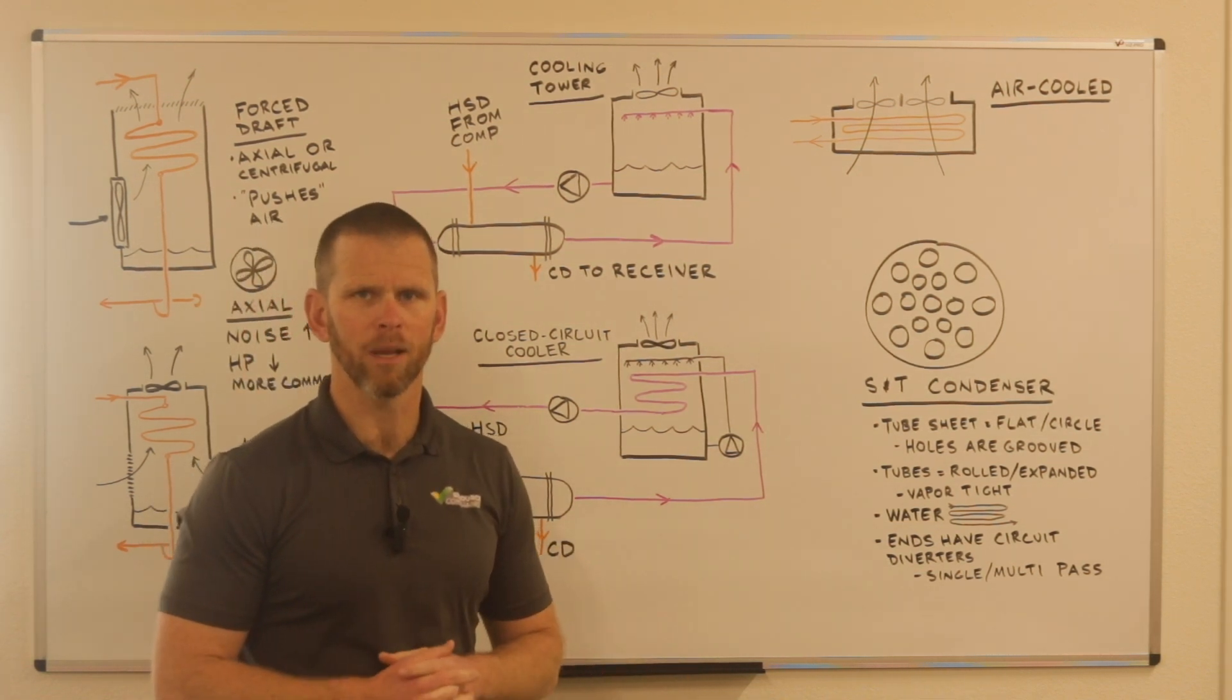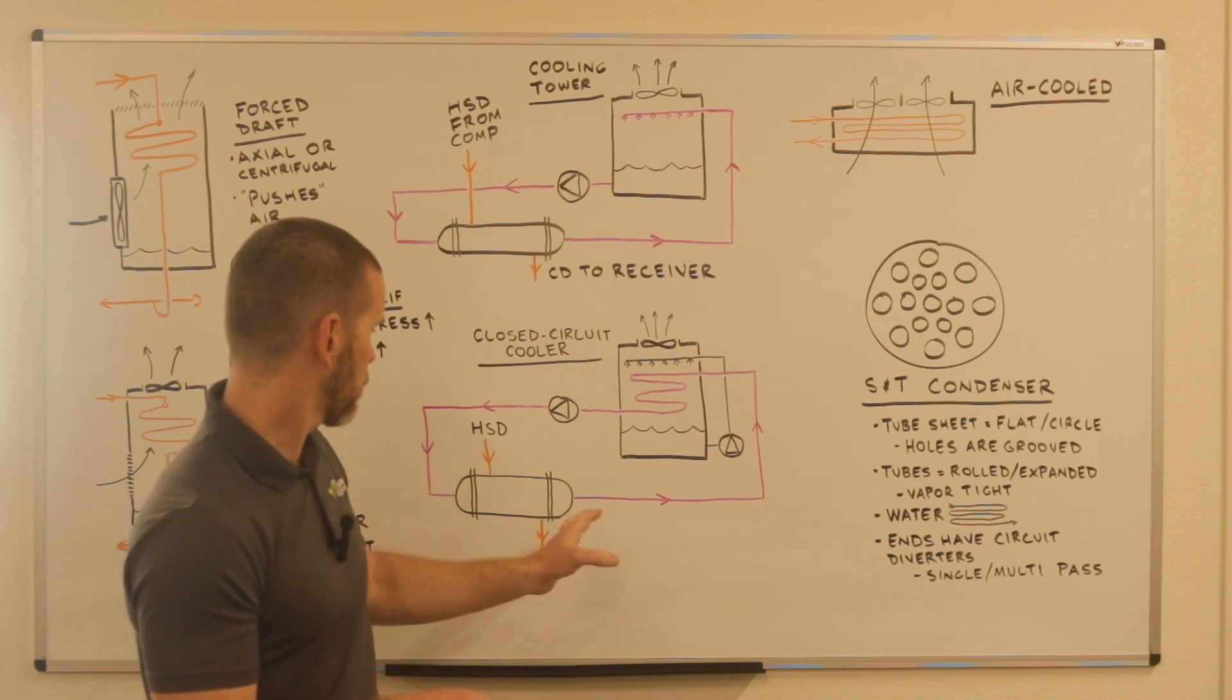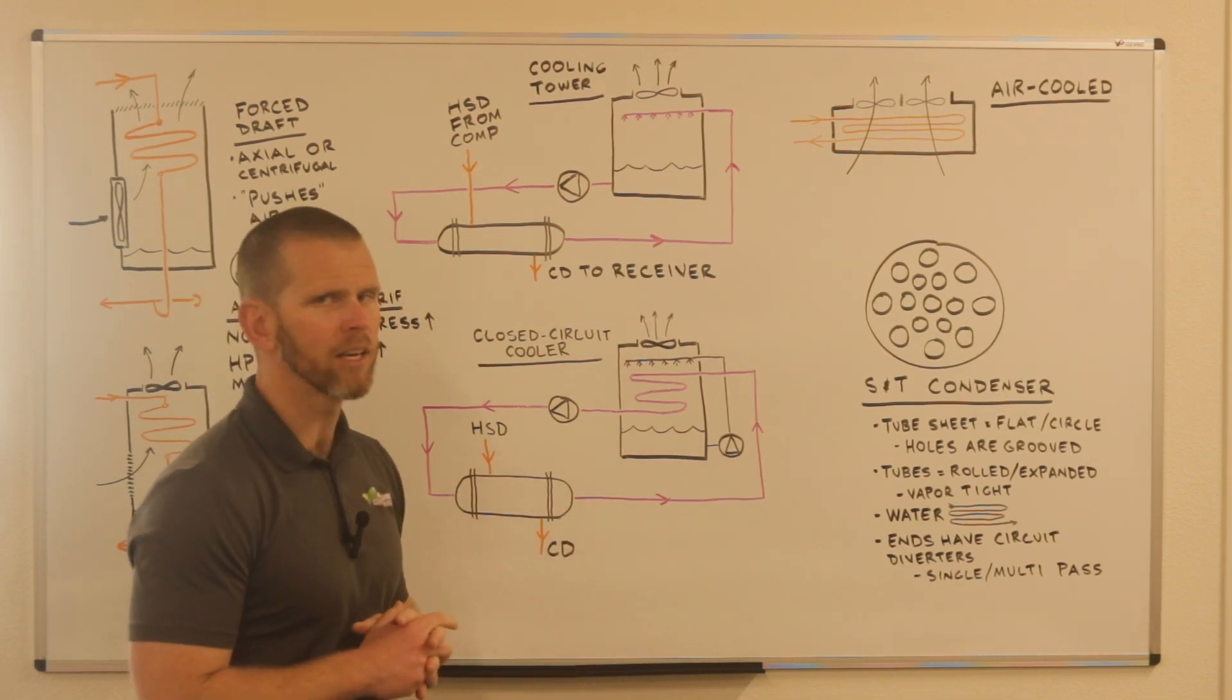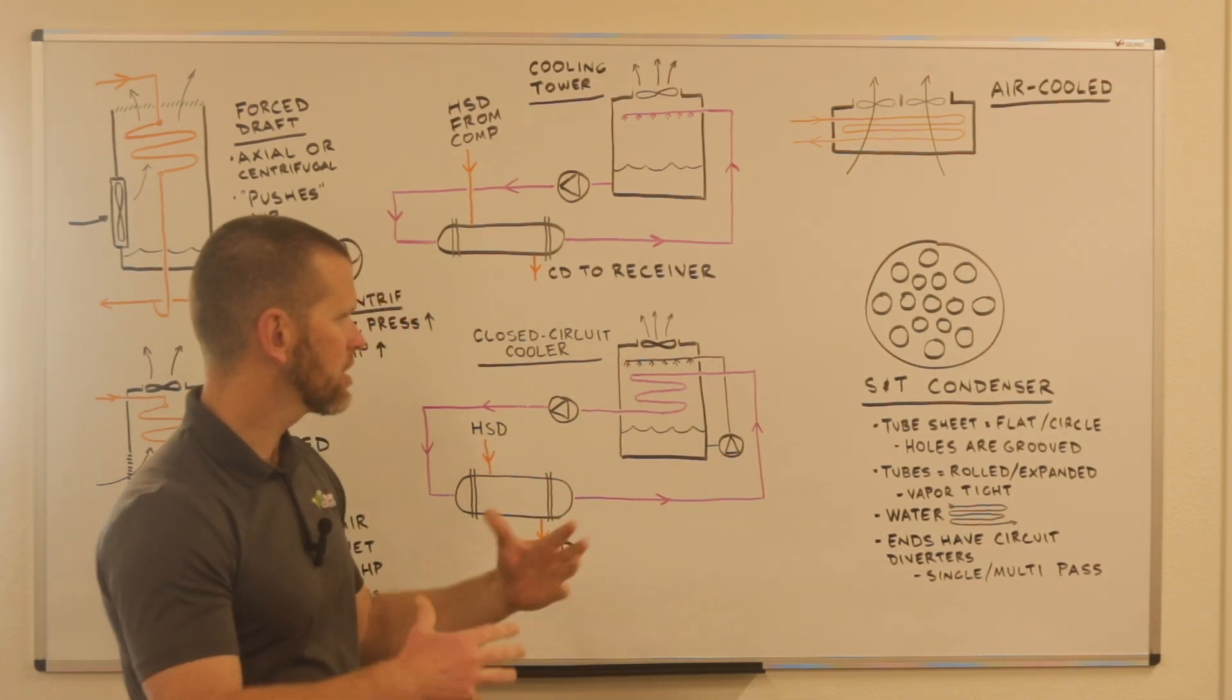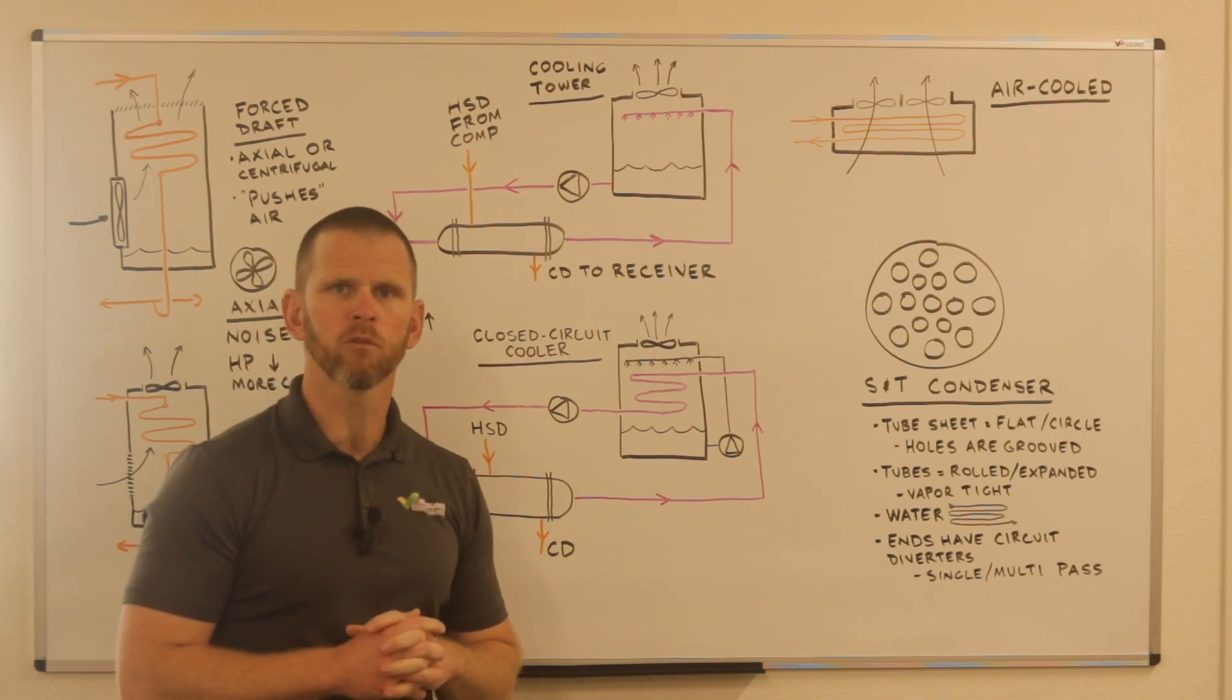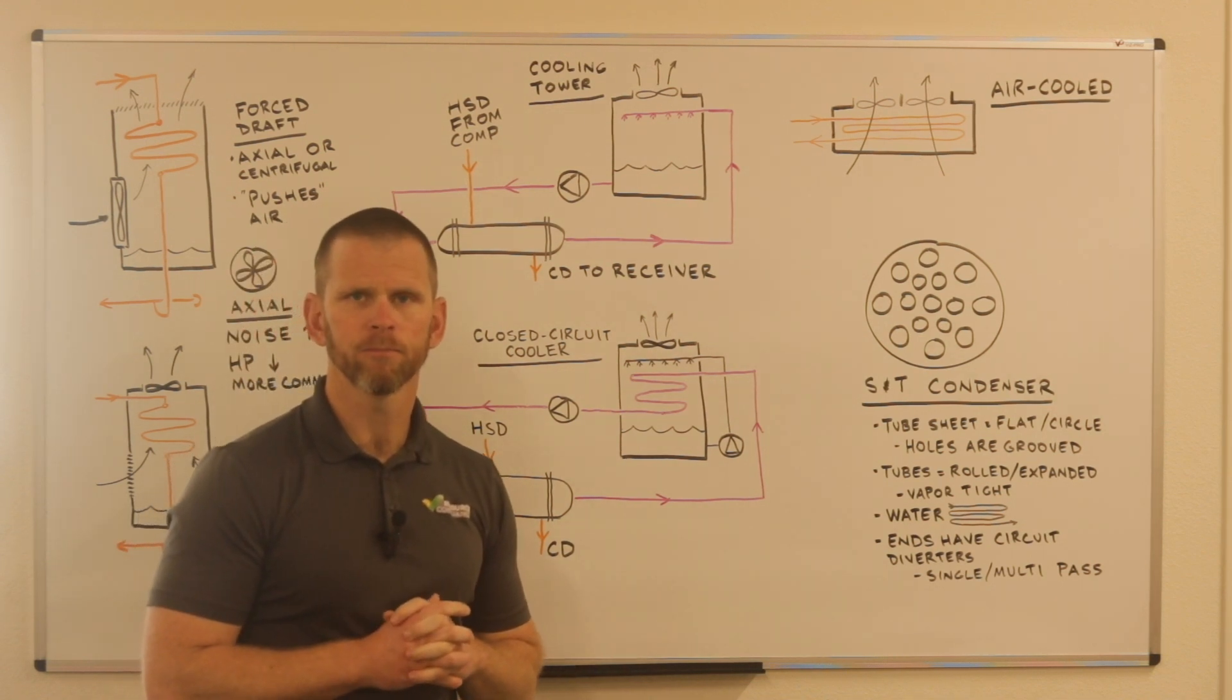There is a process for mechanically cleaning tubes. Of course, it does require opening the ends so that you can get to them. So those are just some of the kind of high level items for a shell and tube condenser.